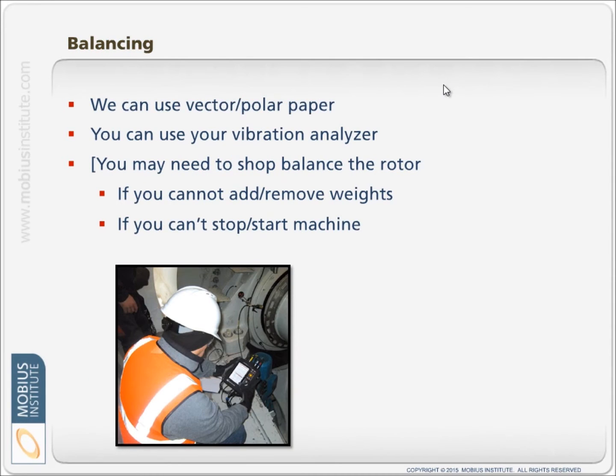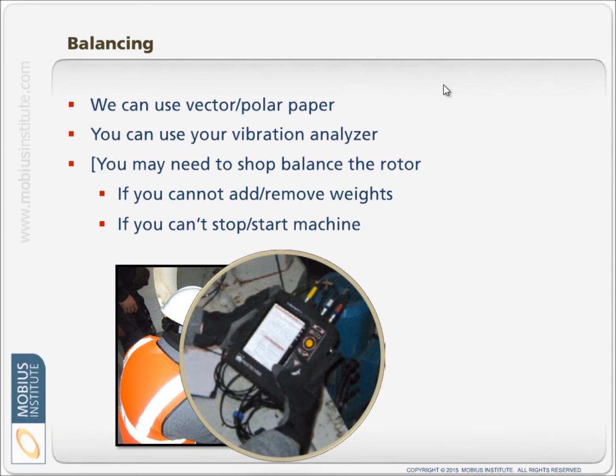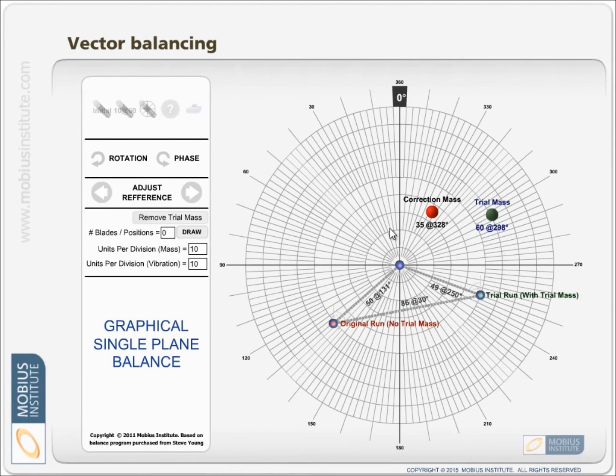We can use vector or polar paper to draw out these vectors that I sort of mentioned a moment ago. Or you should find that your vibration analyzer has a balancing program to do this type of work. Now this is the vector method. This polar plot here shows the amplitude is radially measured outward. So we calibrate our paper to be in line with the vibration units and amplitudes that we are seeing.